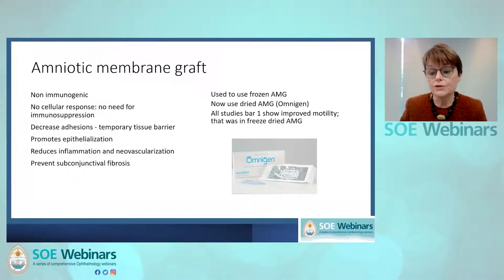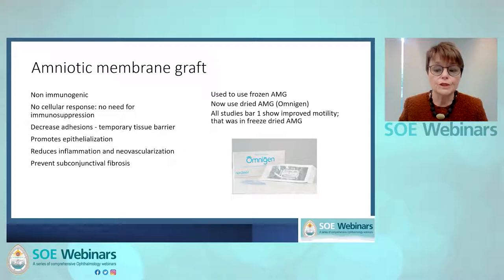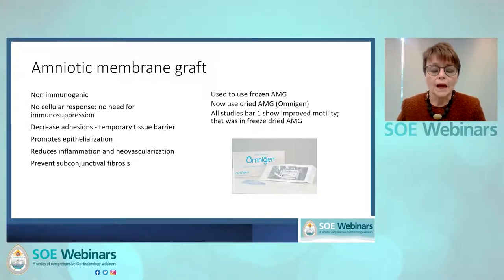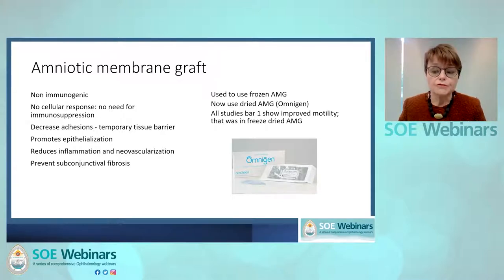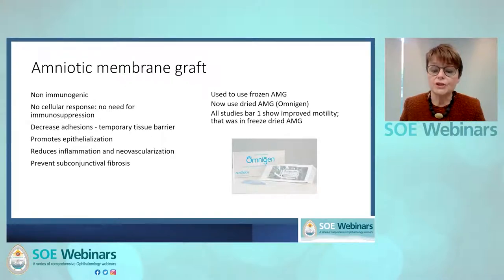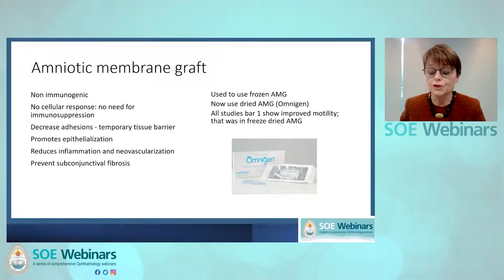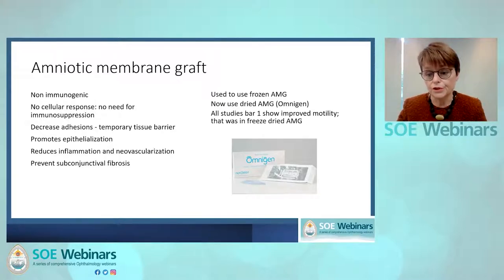Amniotic membrane graft comes from the amnion around the placenta. It has three layers and the great advantage is that it does not excite an immune reaction, so you don't need to immunosuppress your patient. It reduces tissue adherence and has been used in ophthalmology since 1940, originally for surface defects — pterygium repairs and Stevens-Johnson syndrome. I used to use the frozen, but my institution has moved to the dried, which I find perfectly acceptable. You can either wrap it around the muscle to stop adhesion to the globe, or split the conjunctiva and put it over the muscle and under Tenon's. It works very well to reduce adhesion. Use it epithelial side up — the Omnigen helpfully has a marker to show which way.